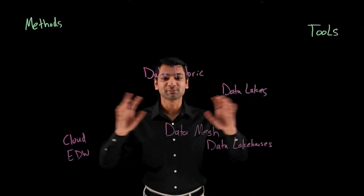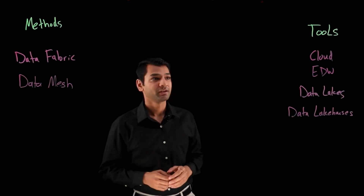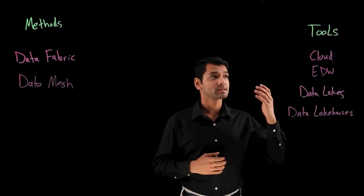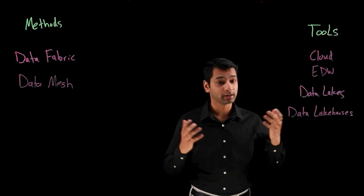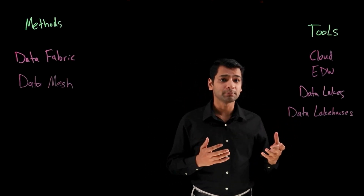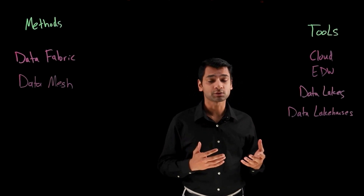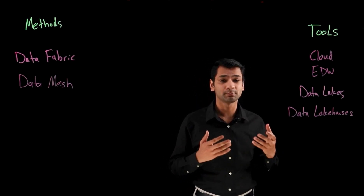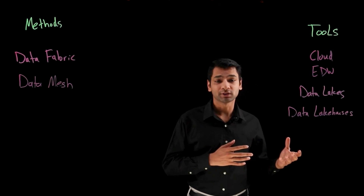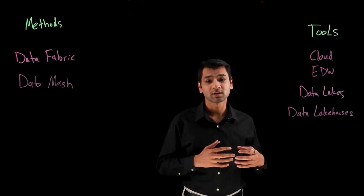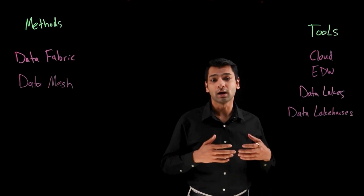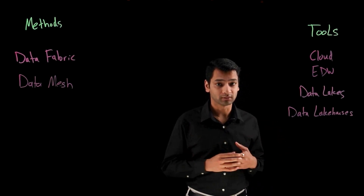So let's move these to the right categories. On the tool side we have things like a cloud data warehouse or an enterprise data warehouse. These have traditionally been large central repositories for clean and organized business operational data. In the past they were hosted locally in on-premises systems but have more recently started moving into cloud-native managed offerings.